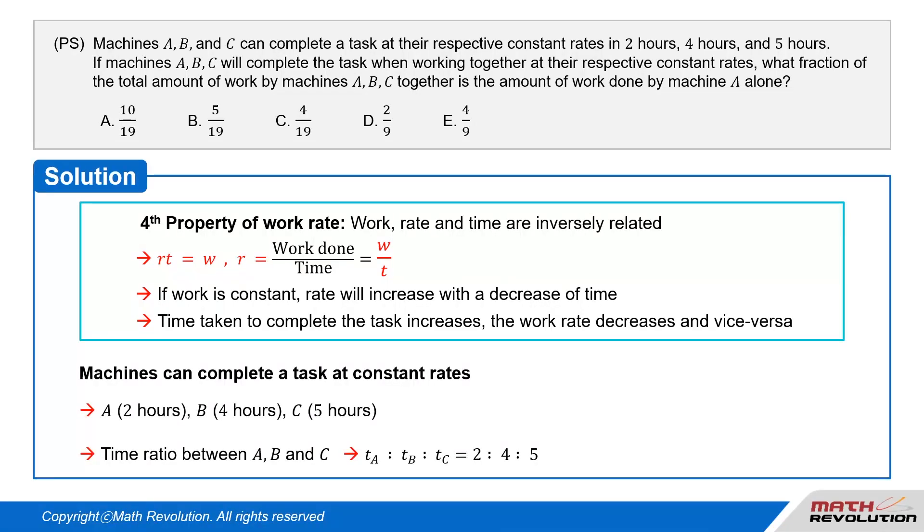Machines A, B, and C can complete a task at their respective constant rates in 2 hours, 4 hours, and 5 hours. We are looking for the fraction of work done by Machine A if they all work together.